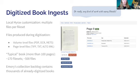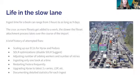Our digital collection backlog for ingest contains thousands of these already digitized books, so this is really something that we need to pay a lot of attention to. Unfortunately, we've been stuck in the slow lane with this process. The image on the right is a photo of traffic on Interstate 85 going into Atlanta, and this reminds me a lot of watching the Sidekiq queue for a very slow ingest.